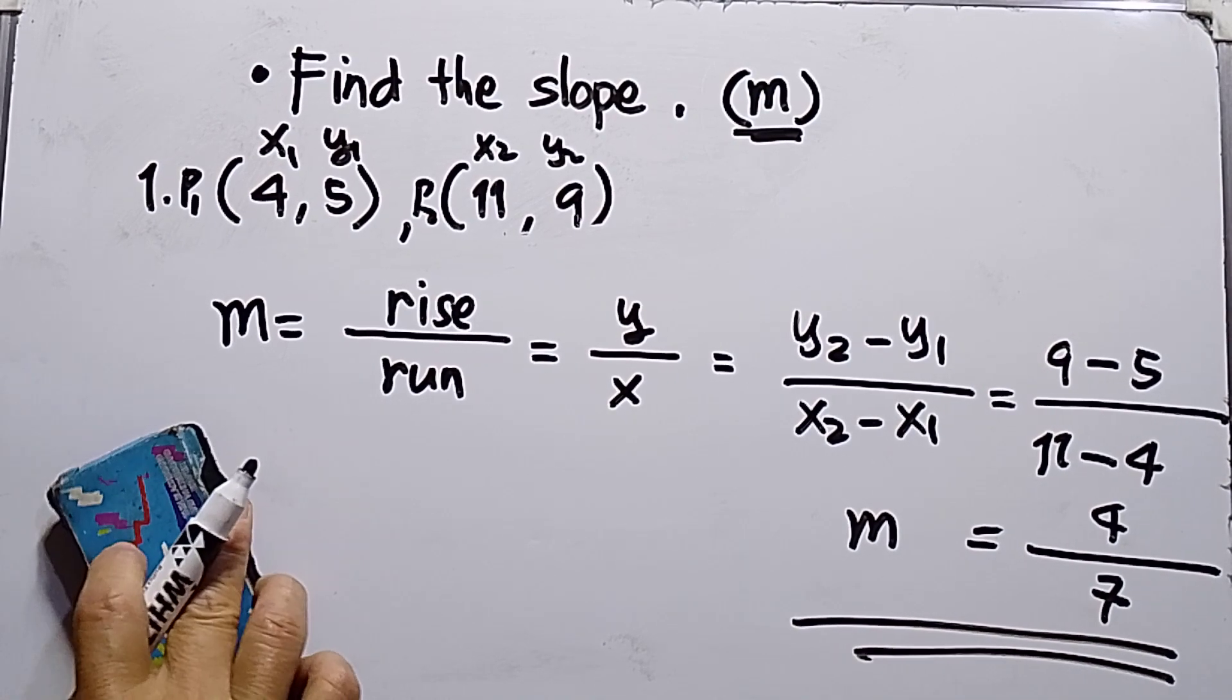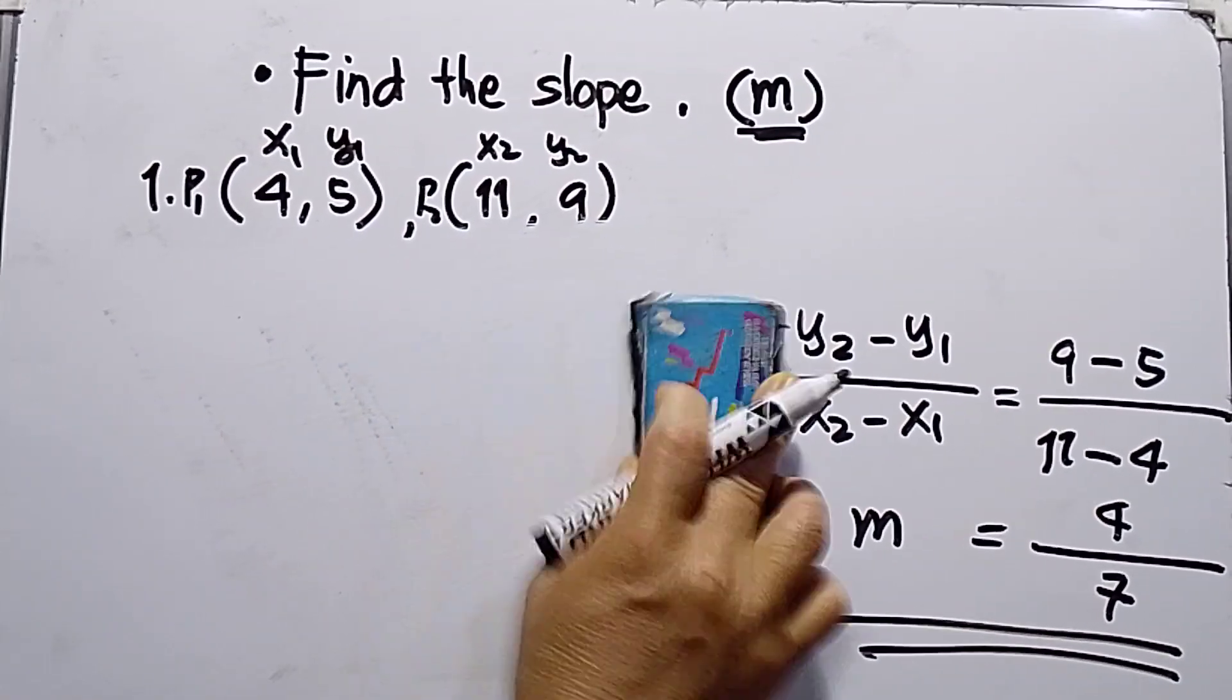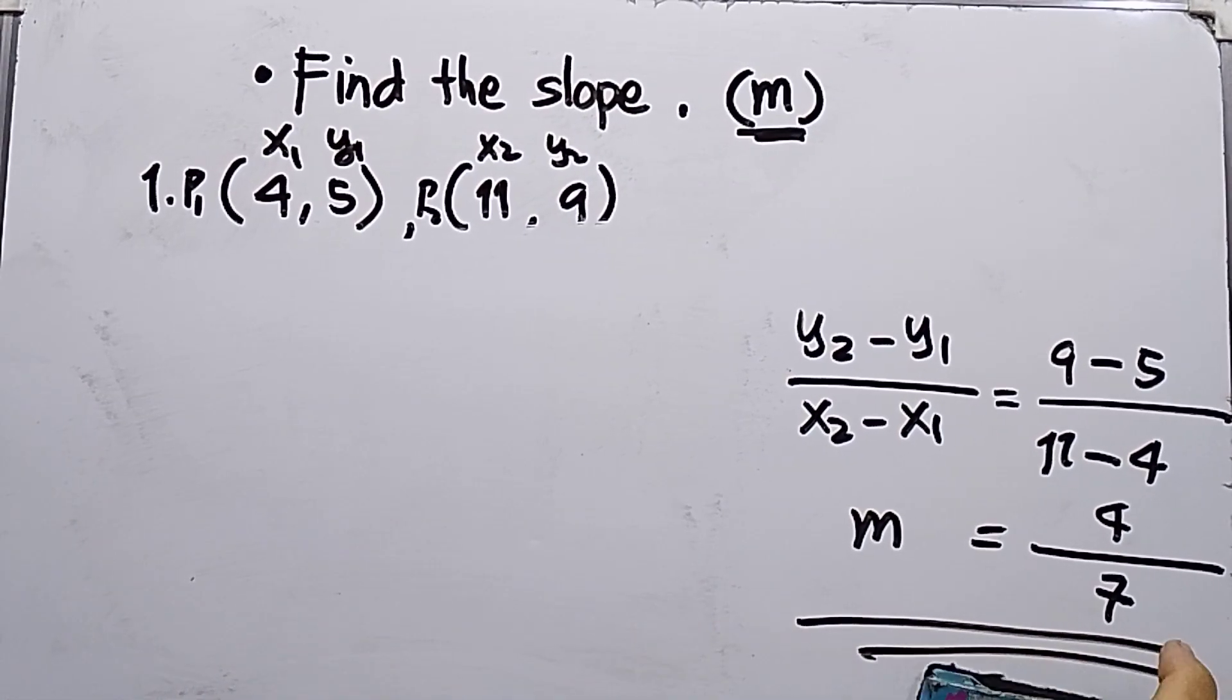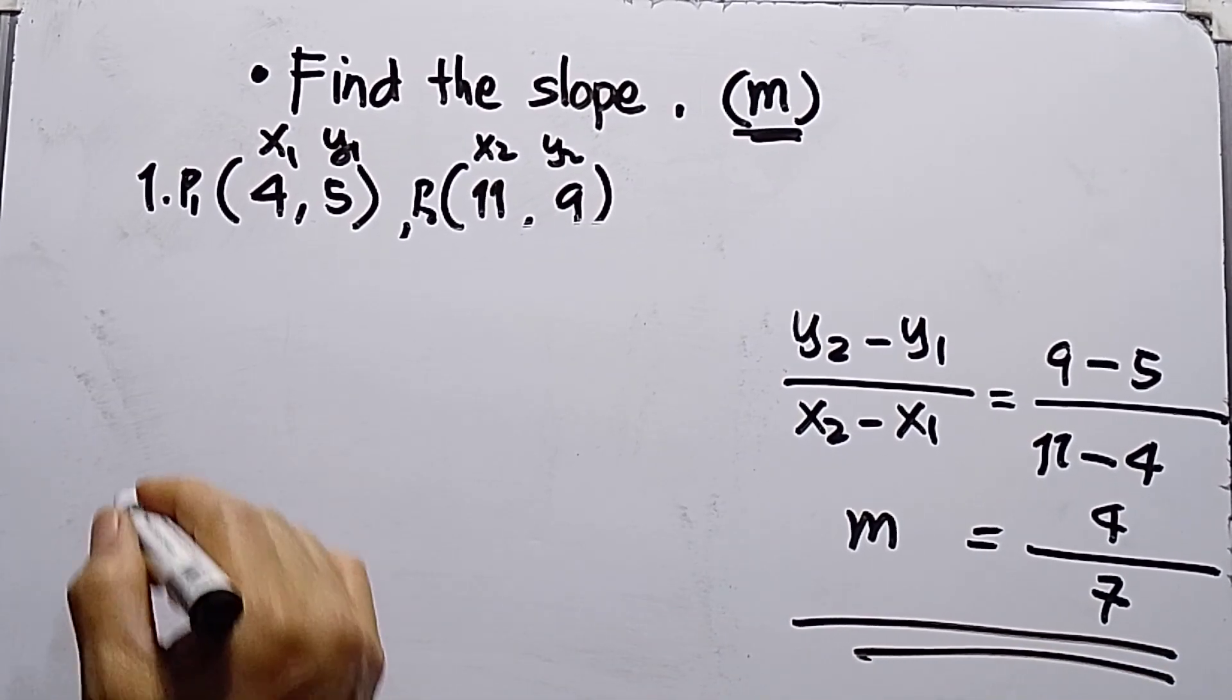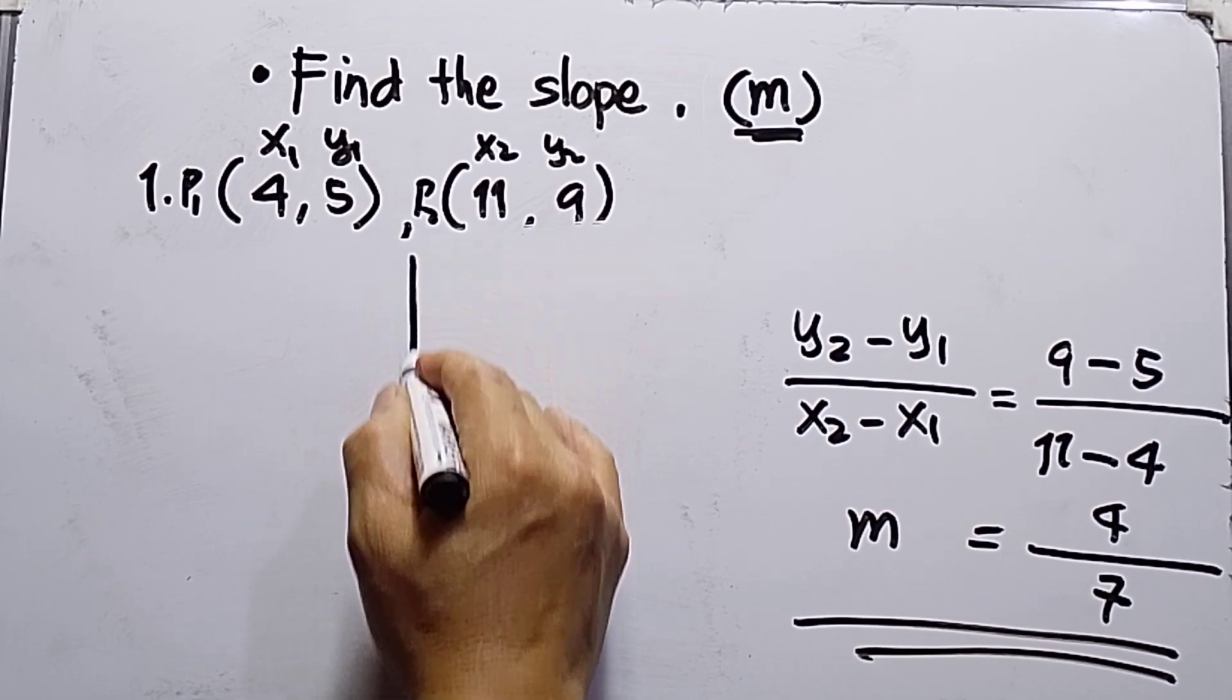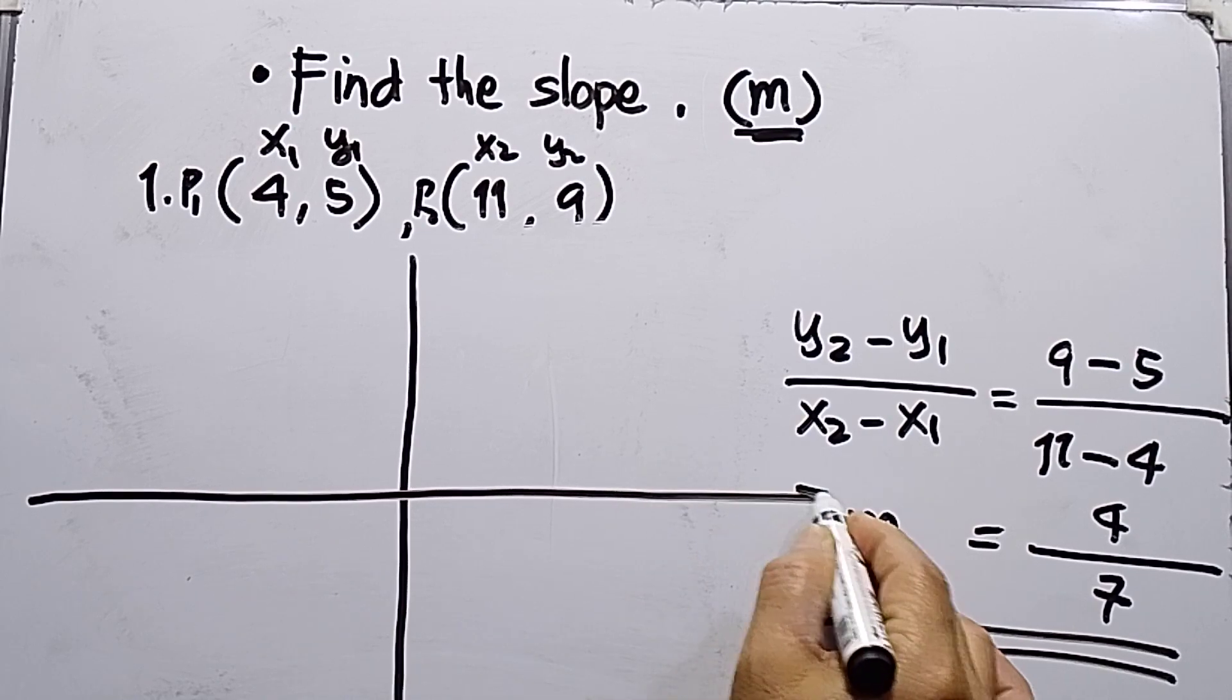Now, I need to plot in the Cartesian coordinates to show how the slope will be located. So this will be my Y coordinate. This will be my X.